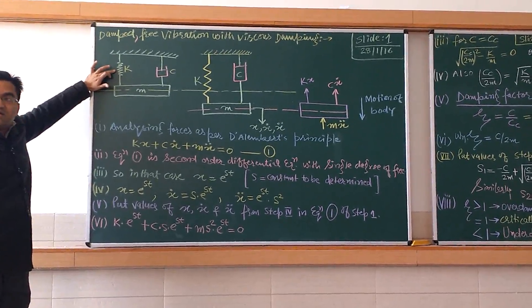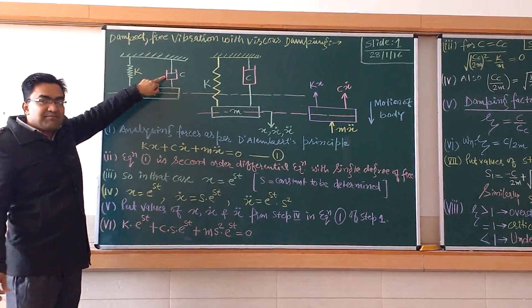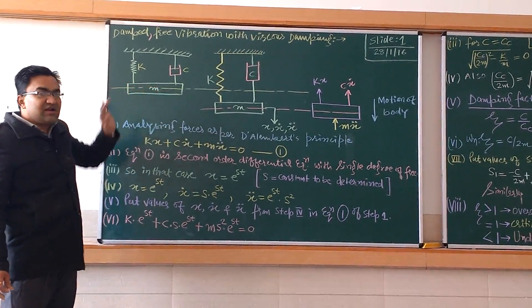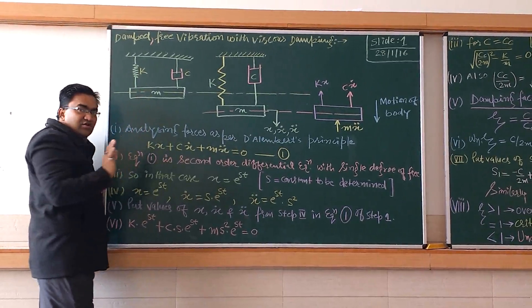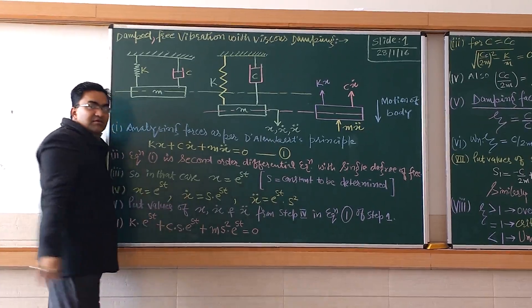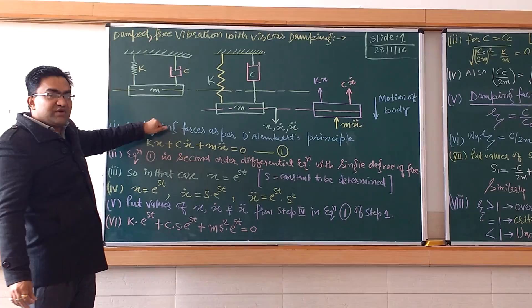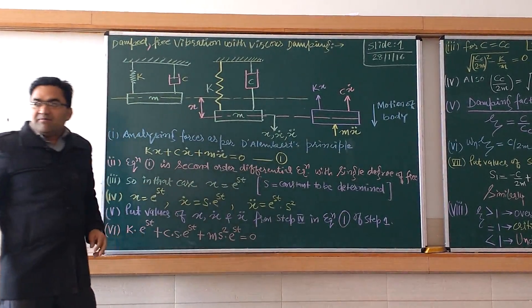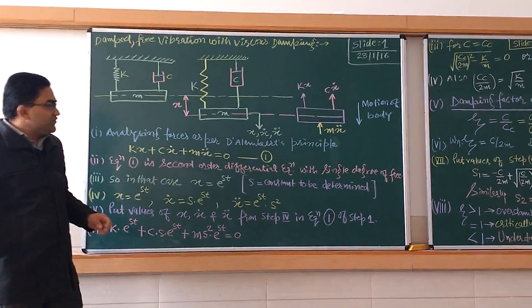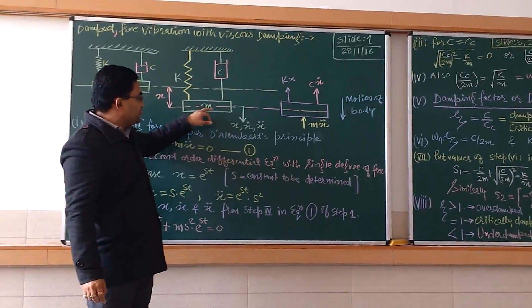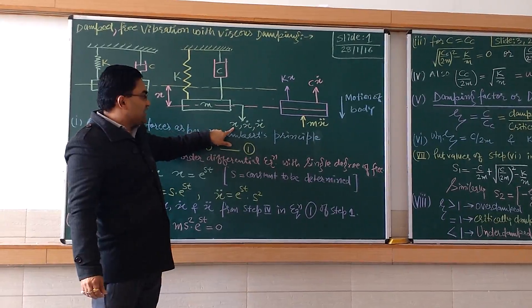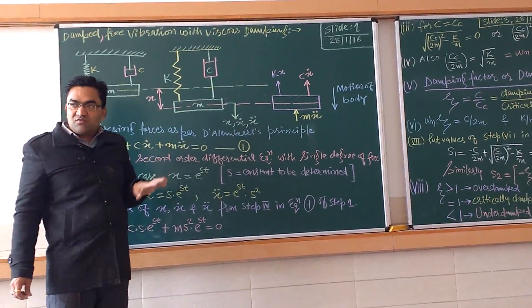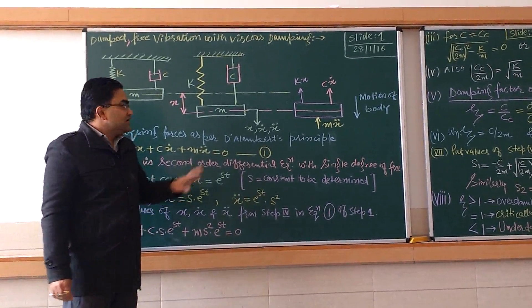This is a system in which a stiffness K is there, and C is a damping coefficient — the damper. This is the mass which has been suspended. The system is presently in equilibrium and the yellow line shows the equilibrium condition. I displace this mass downward up to a displacement of x and then leave it. Due to the movement of the mass in the downward direction, we have displacement x, velocity x-dot, and acceleration x-double-dot.